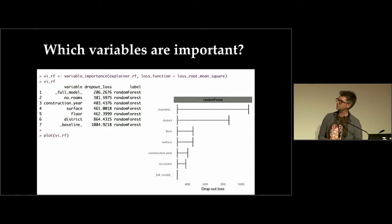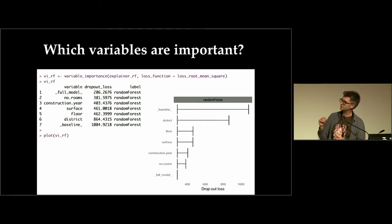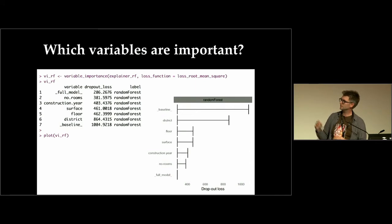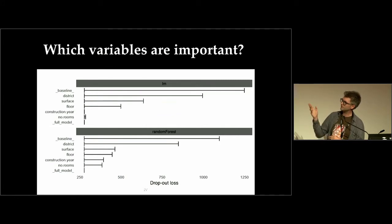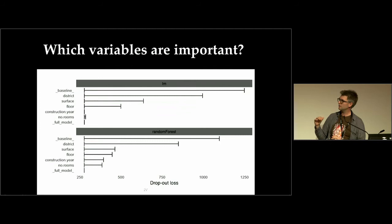The last plot compares model performance — you can use DALEX to see how different variables affect global performance. The first part of my talk was about single predictions; this part is about global explanations. Here you can see that different variables contribute differently. You can compare two models and see that both have similar overall performance, but for random forest variables like construction year are important, while for linear model construction year wasn't that important.